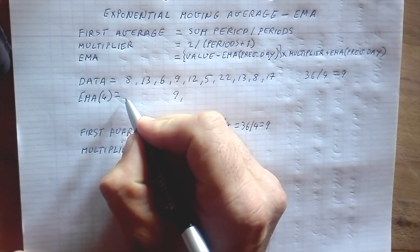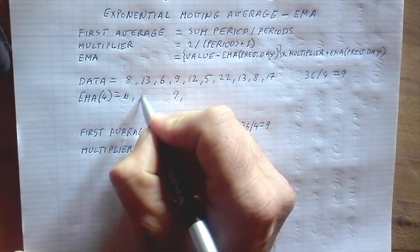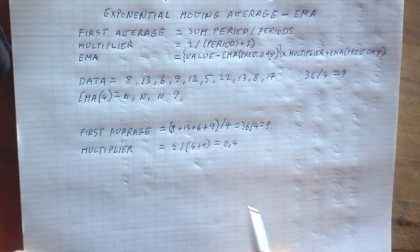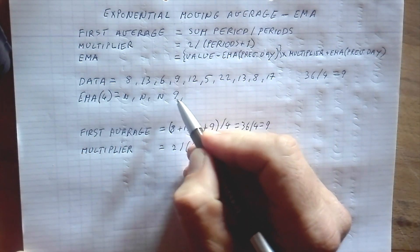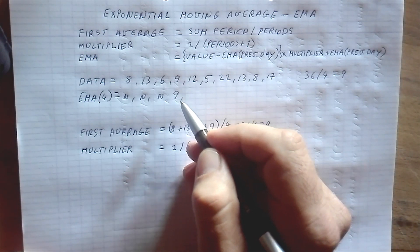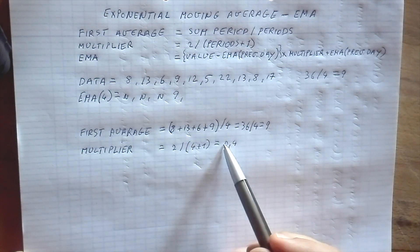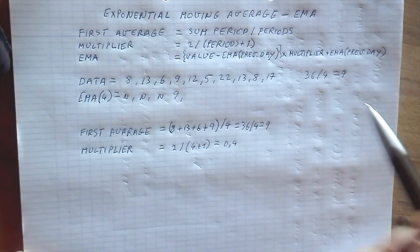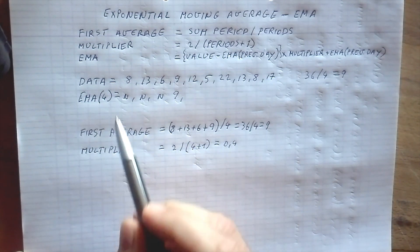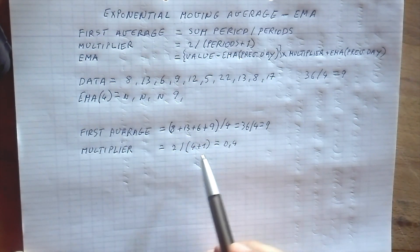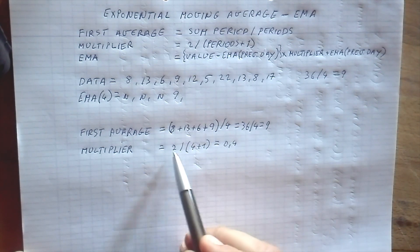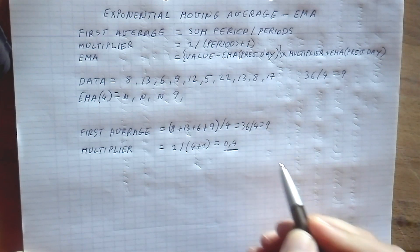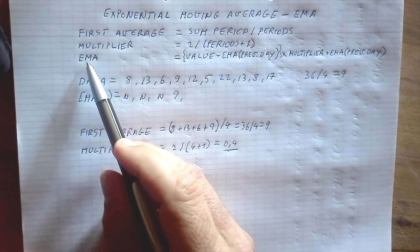The earlier positions will be null, null, null because we don't have enough data to calculate 4 steps. Now we need to calculate the multiplier. The multiplier is 2 divided by (periods + 1), so that's 2 divided by (4 + 1) = 2 divided by 5 = 0.4. So 0.4 is our multiplier.